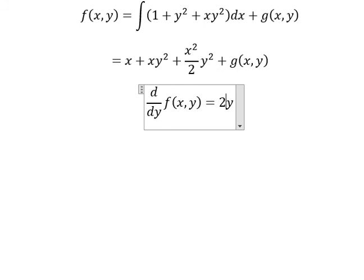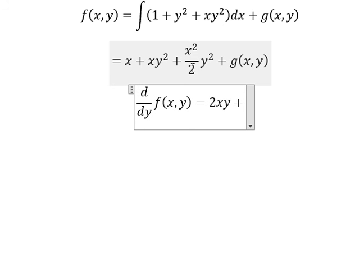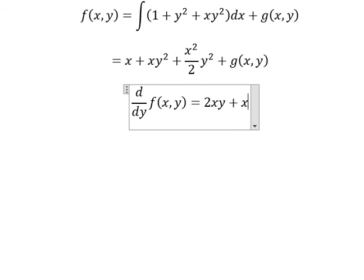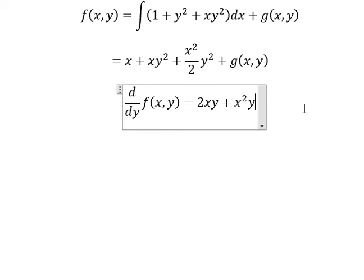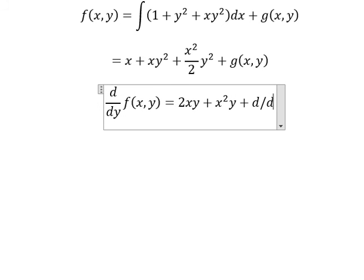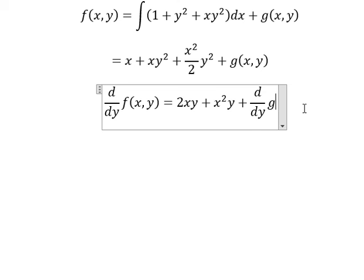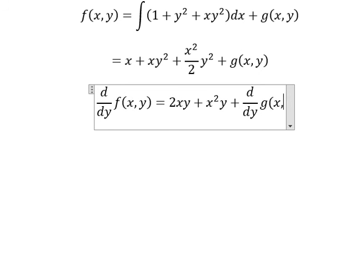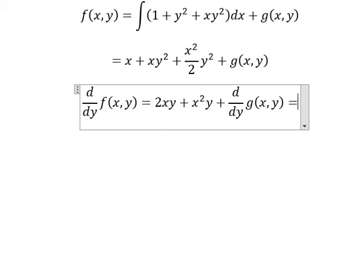First derivative of y squared, we have 2y, and then we have x squared over 2 times y, plus d/dy of g(x,y). This is going to be the first derivative with respect to y.